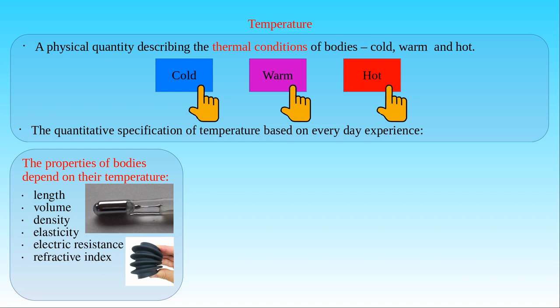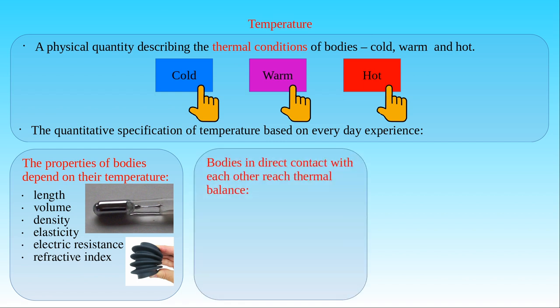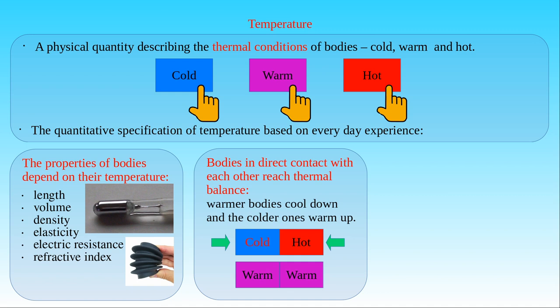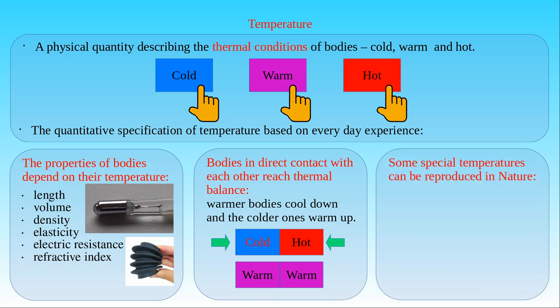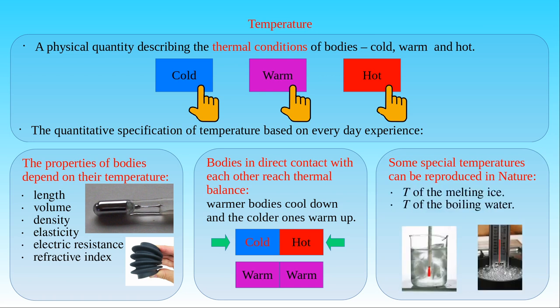Another experience helping us give a quantitative description of temperature is the fact that bodies in direct contact with each other reach thermal balance, provided no phase transition or chemical reaction is involved. If we bring cold and hot bodies into direct contact, then the hot body cools down and the cold one warms up, both reaching a common warm thermal state — they equalize their temperature and reach thermal balance. The third fact is that some special thermal states with given temperatures can be reproduced in nature, such as the state of melting ice or boiling water for a given pressure. These three facts of experience provide an objective basis for the quantitative description of temperature, which is independent of our sensory perception.